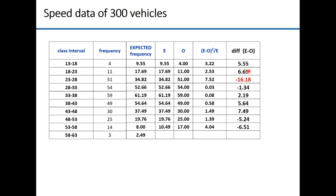If you take the simple difference between expected and observed frequency, the maximum difference — here 16.18 — is the KS value. This KS value, or the sum of all chi-square values, should be less than the tabulated critical value for a given degree of freedom and level of confidence.